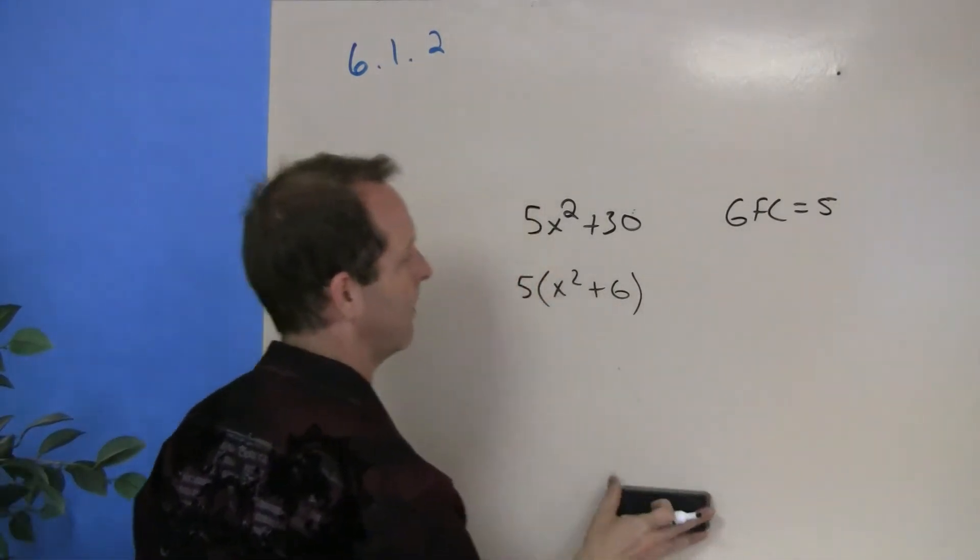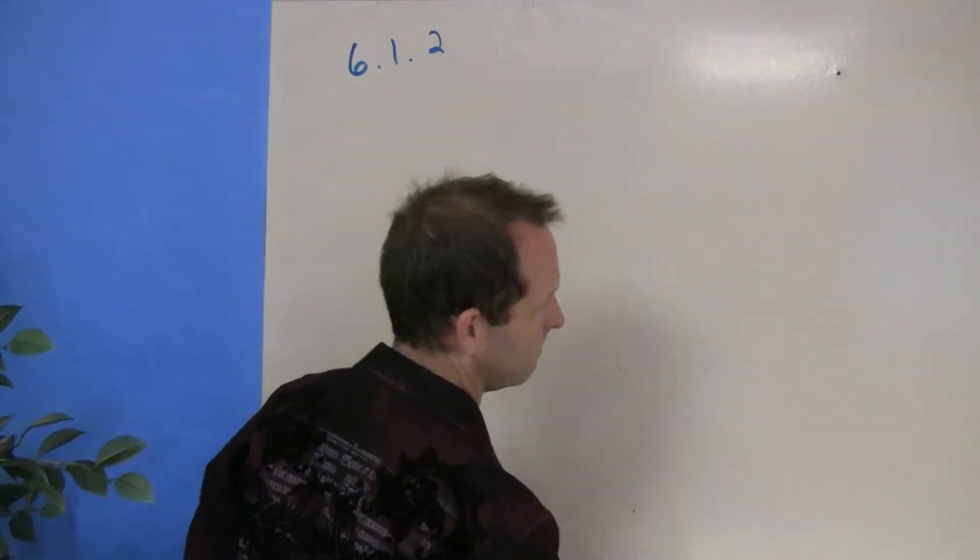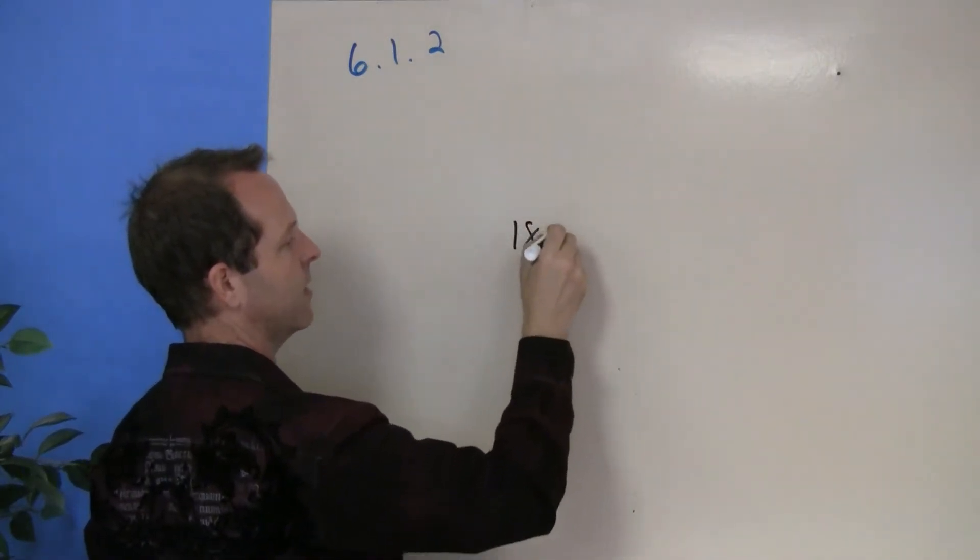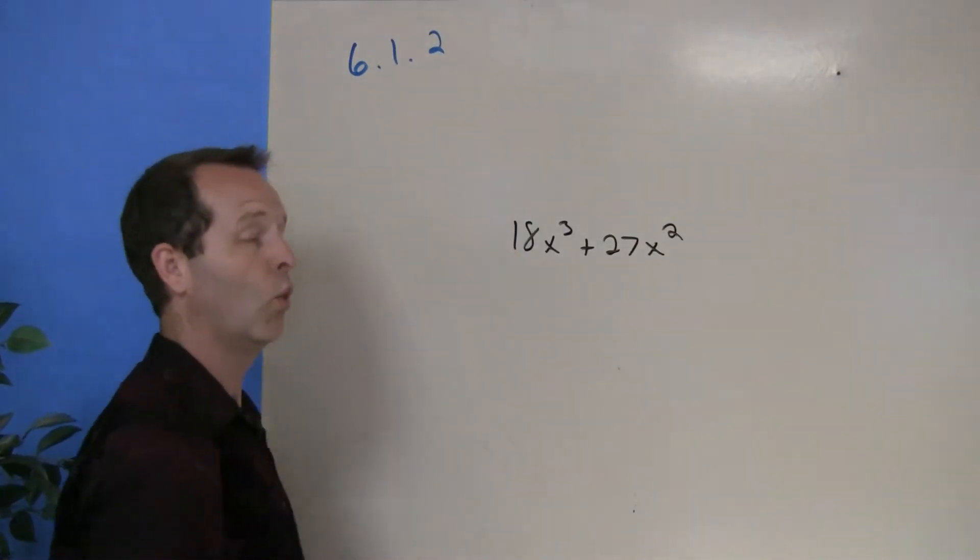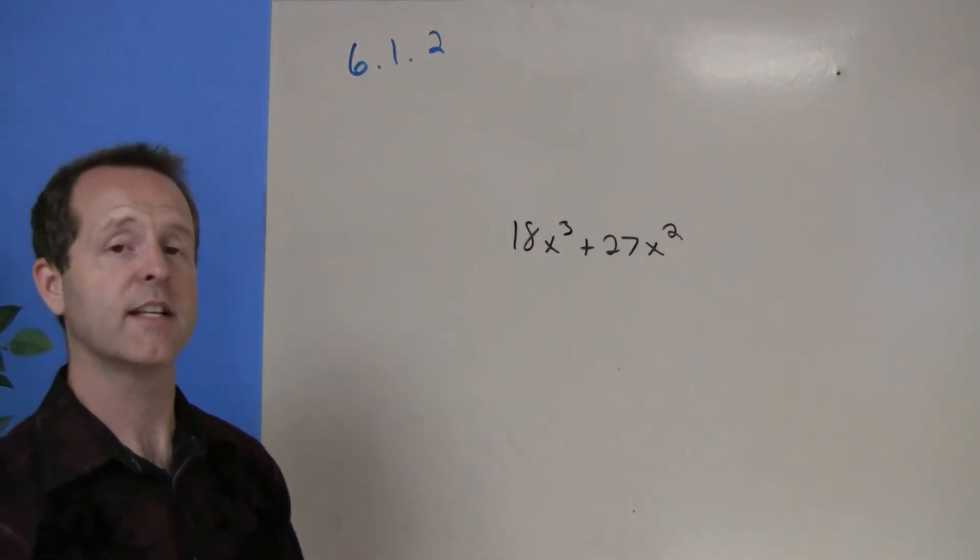Let me give you a couple other examples of using this. Let's imagine 18x³ + 27x². What's the greatest common factor? And let's pull that out.